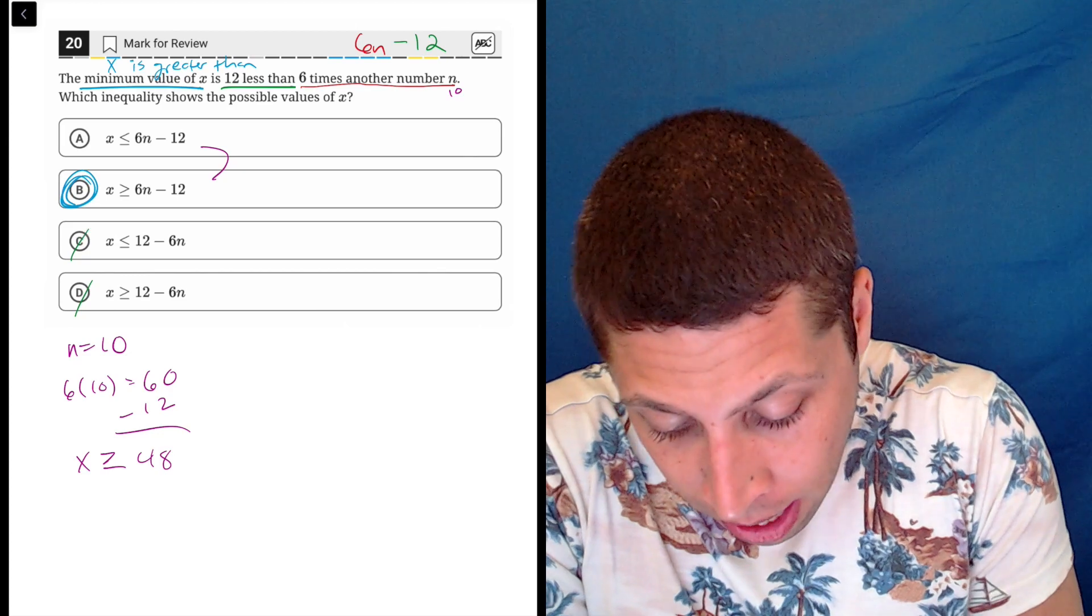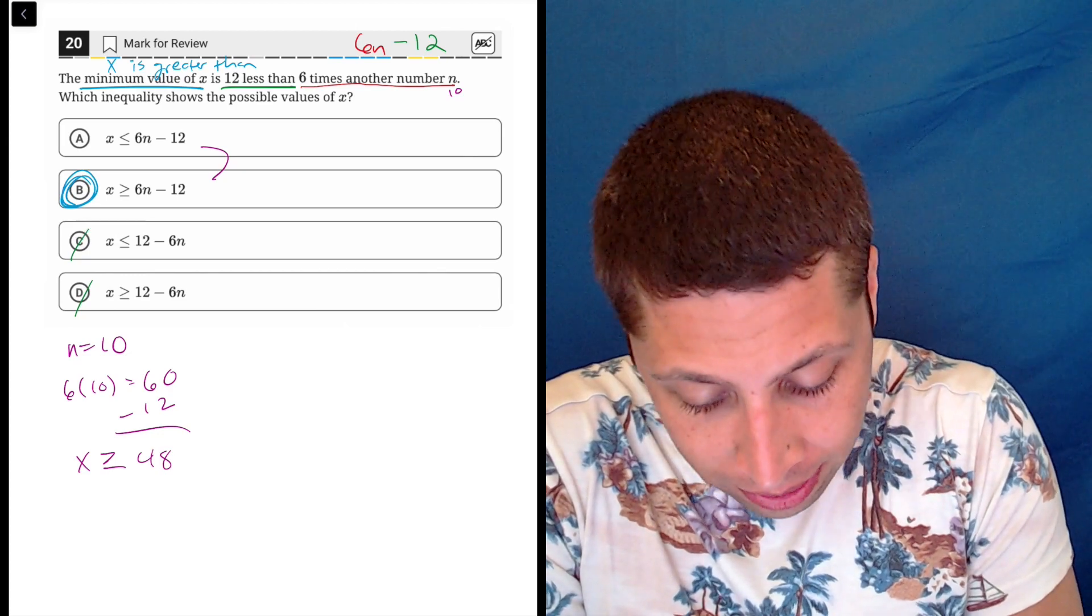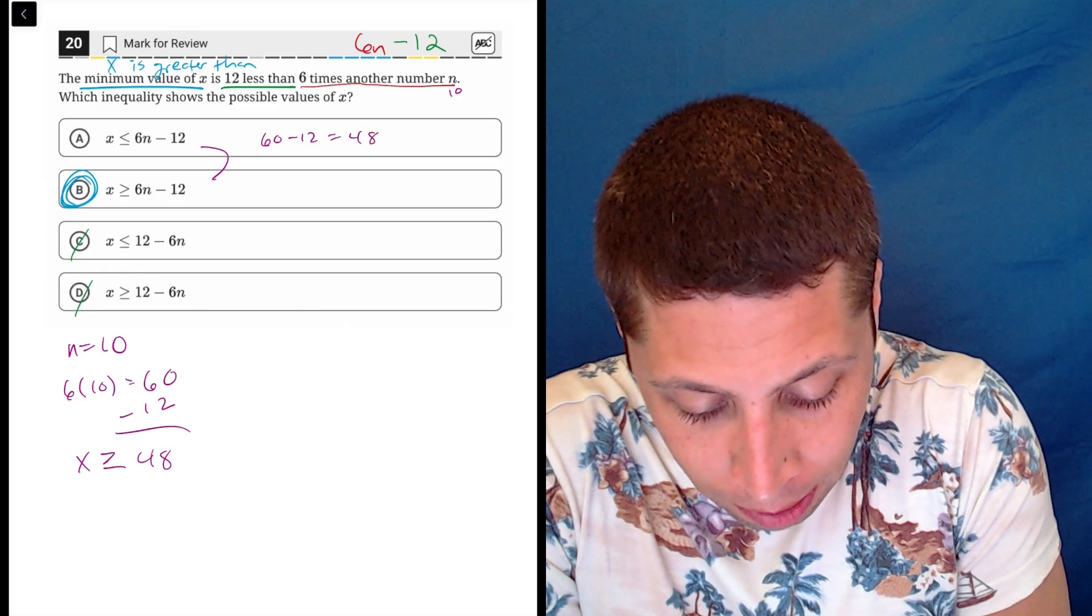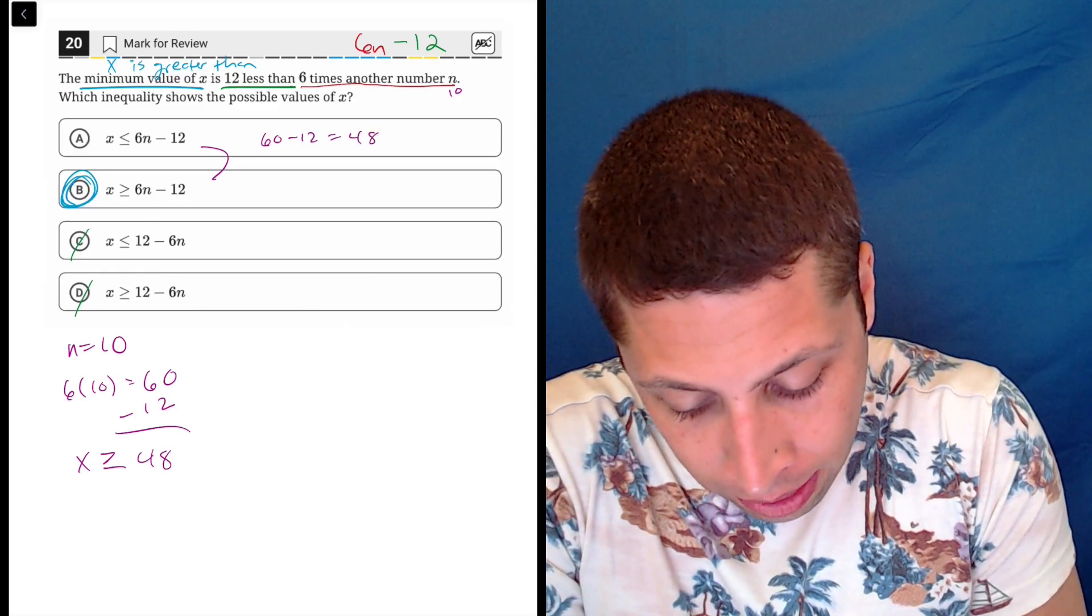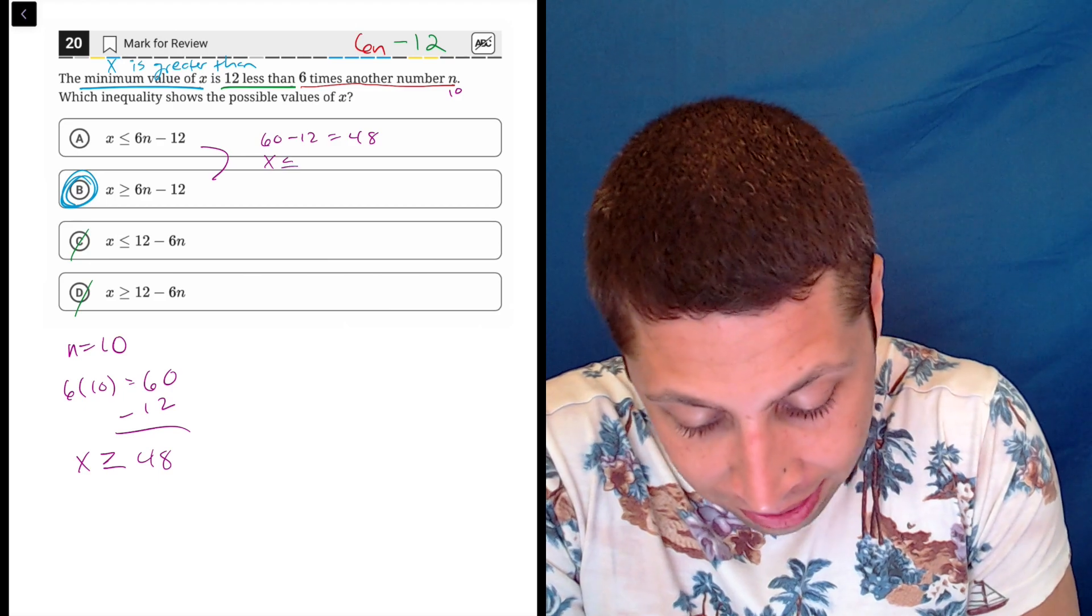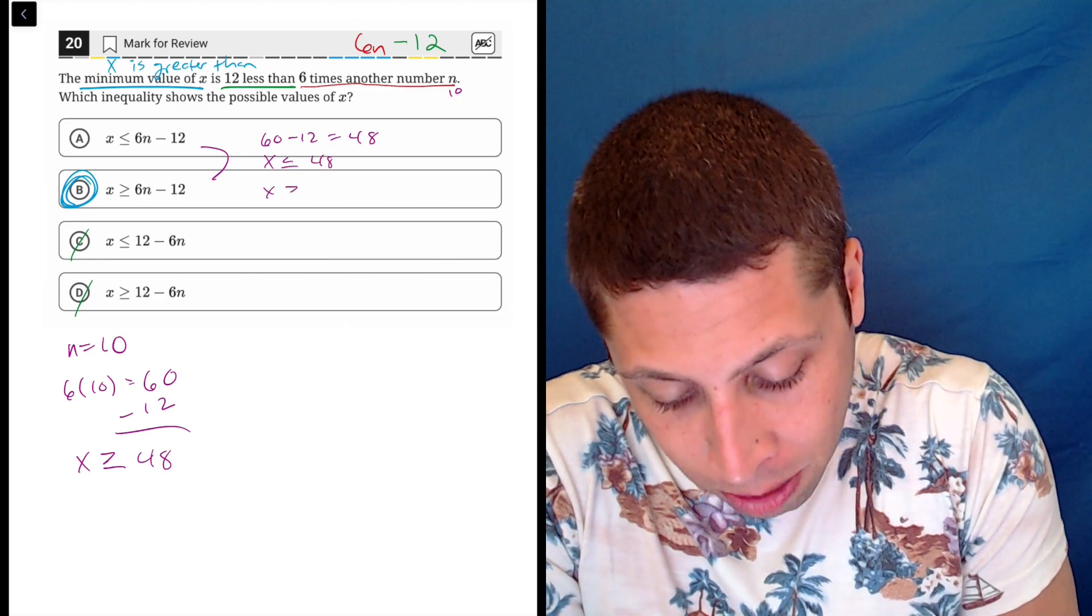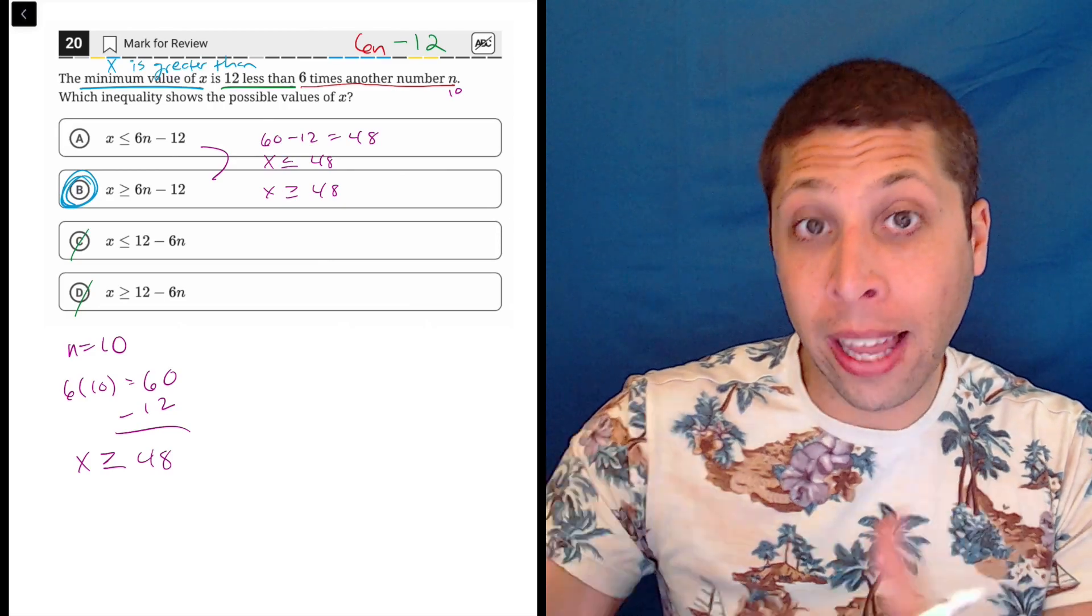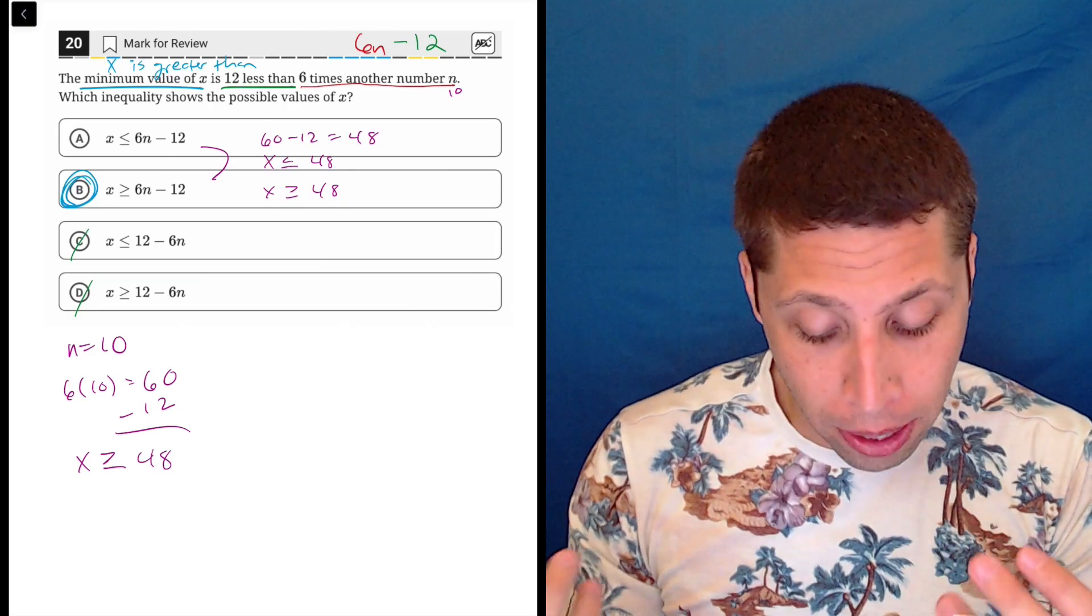In both A and B, we're still going to have the 60 minus 12. So 60 minus 12, which is 48. So these are both going to be, in choice A, it's going to be x is less than or equal to 48. In choice B, it's x is greater than or equal to 48. So hopefully you would get that, and you wouldn't mess up the inequality symbol from there.